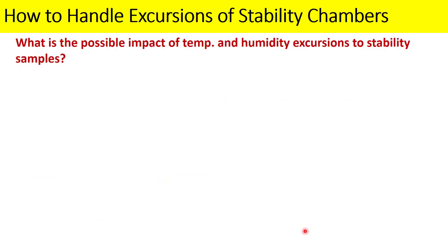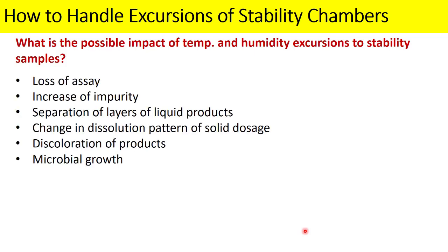The possible impacts of temperature and humidity excursions on stability samples include: loss of assay or potency of the product, increase of impurities, separation of layers in liquid products, change in dissolution pattern of solid dosage forms, discoloration of the product, and microbial growth.